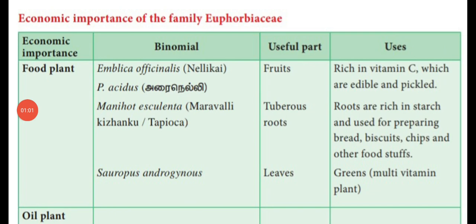Economic Importance of the Family Euphorbiaceae. First: Food Plants. Emblica officinalis, in English Gooseberry, in Tamil Nellika. Phyllanthus acidus, in Tamil known as Ari Nellikai. Manihot esculenta, that is Maravalli Kelangu or Tapioca. Useful parts are Nellika fruit and Maravalli Kelangu tuberous roots. Nellika is rich in vitamin C, used as edible fruit; we can also prepare pickle. Maravalli Kelangu tuberous roots are rich in starch and used to prepare bread, biscuits, chips, and other foodstuff.